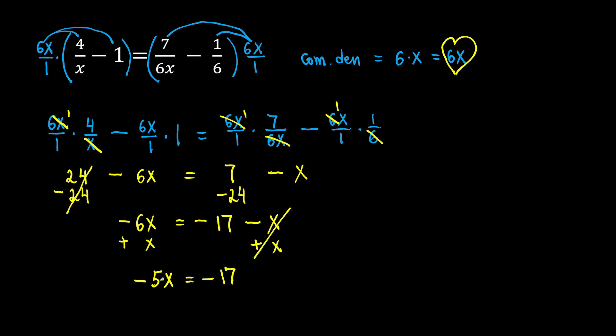Look here. What's the opposite operation of multiplication? Division. So we divide both sides by negative 5. We're almost there. Negative 5x divided by negative 5 will be 1x or just x. And then negative 17 divided by negative 5. Negative divided by negative will be positive. So the answer will be 17 over 5.